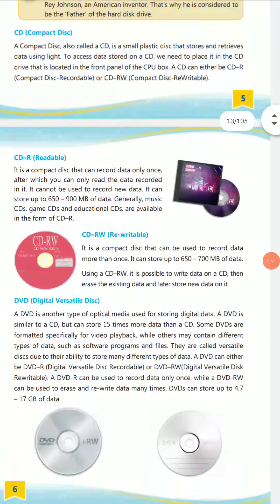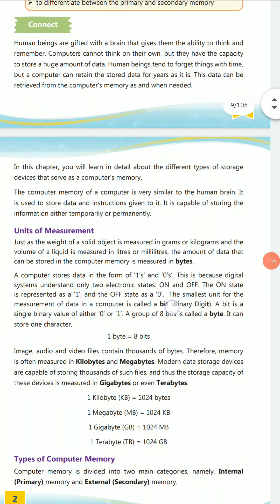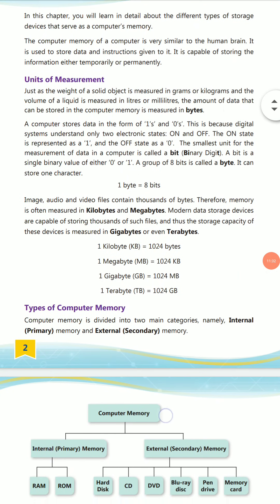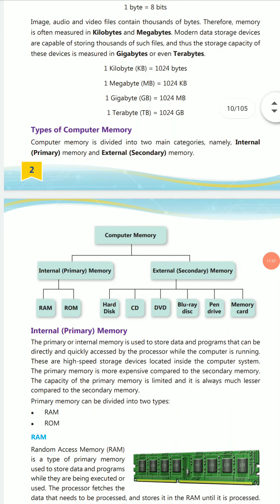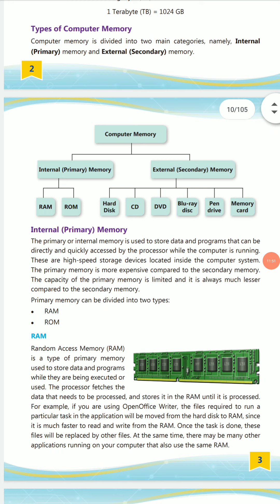To summarize, today we learned how to measure computer memory using units such as KB, MB, GB, and TB. We also covered types of memory: internal memory (also called primary memory) and external memory (also called secondary memory). In primary memory, we learned about RAM and ROM. In external memory, we covered hard disk, CD, DVD, Blu-ray disc, pen drives, and memory cards.